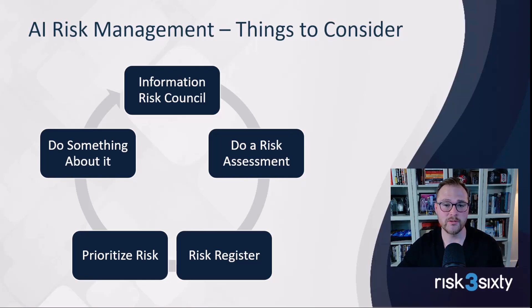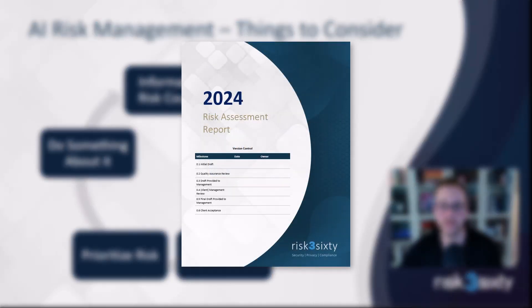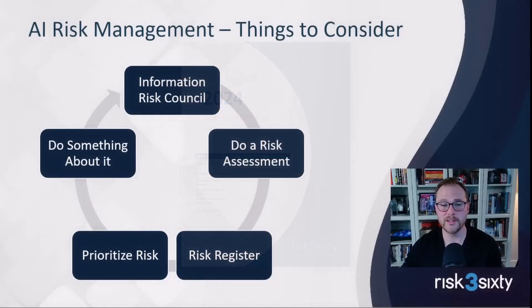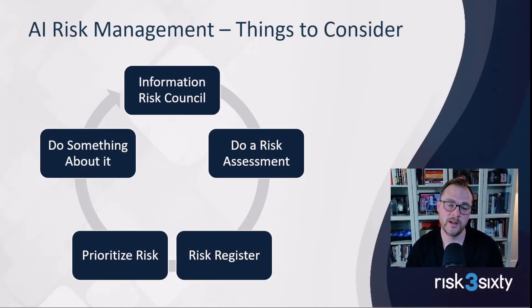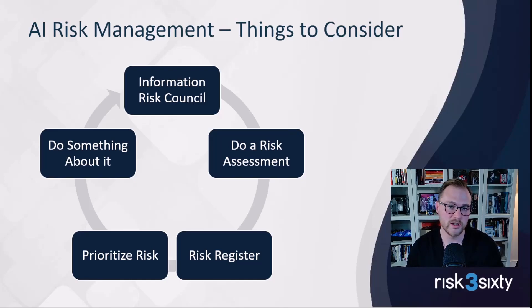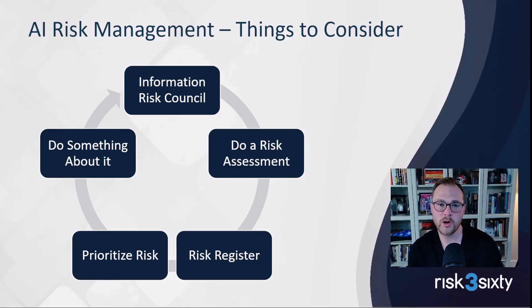You also have to conduct an actual documented risk assessment — that's what the framework refers to. When you do a risk assessment, you're going to uncover risks, and you have to log those somewhere in a risk register. As you've logged risks, you have to prioritize them: are these high, low, or medium risks? What's the nature of the risk, how material are they, and who owns the risk? That's the prioritization process that your risk management policy will define.